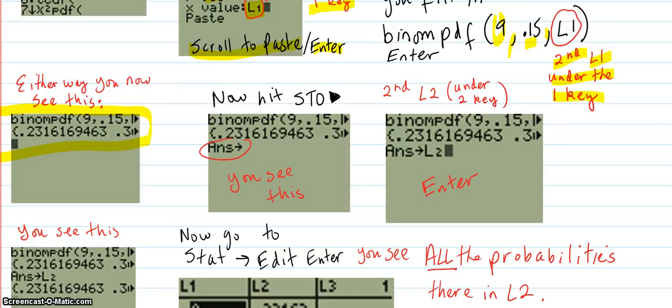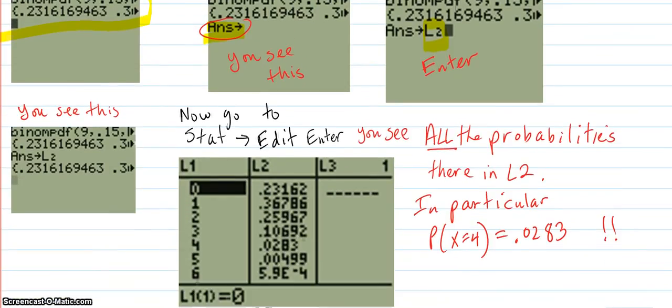Now what you want to do is store them into L2. So what you do is hit store, the store key, and you'll see this answer appear on the home screen. You put the L2 here. How do you do the L2? That's second L2, which is under the two key. And you enter. So now you go down to here. You see this. You see that the answers have been put into L2.